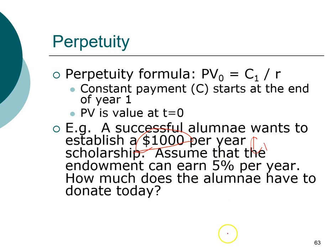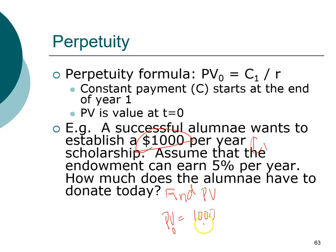How much do you have to donate today? Finding how much to donate today means finding the present value. The present value today equals the cash flow starting in year one — that's one thousand dollars — divided by the interest rate. Remember we're using a formula, so we convert five percent into a decimal: divided by 0.05, which gives us twenty thousand dollars today.